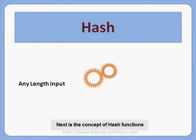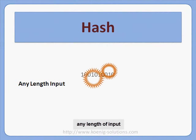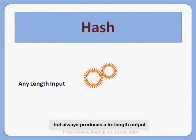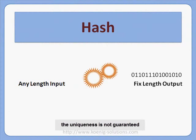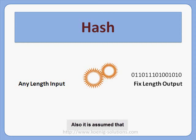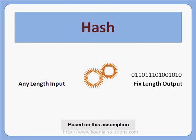Next is the concept of hash functions. A hash is an algorithm which can take any length of input but always produces a fixed-length output. As input is innumerous and output is limited, uniqueness is not guaranteed but collisions are not likely to happen frequently. It is assumed that if data bits are modified, the hash output will change — and based on this assumption, the integrity of data is verified.